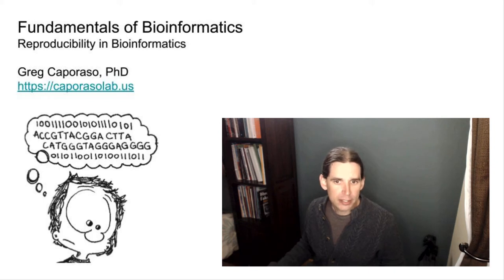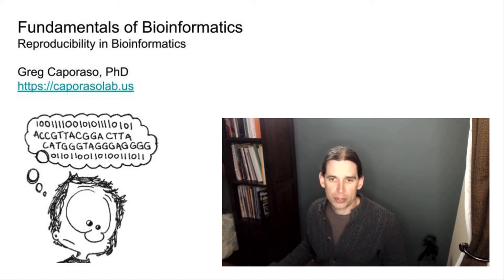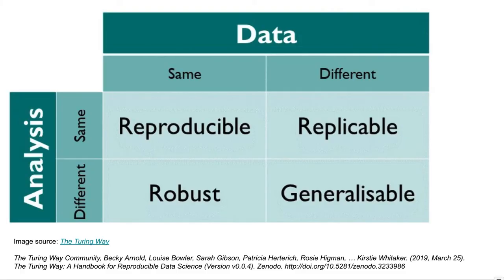Let's first talk about what reproducibility means, and then I'll work through some examples showing how I document my work. This figure came from The Turing Way, which is linked at the bottom of this slide. I like it because it shows a couple of different axes that we should be thinking about.